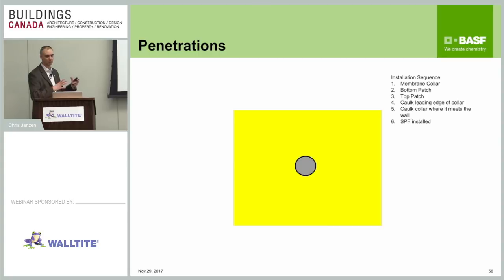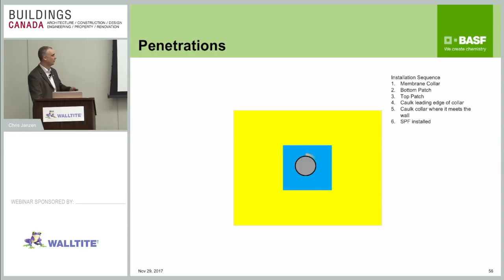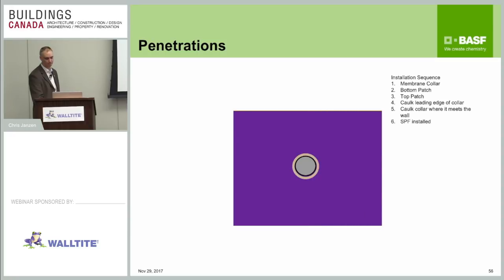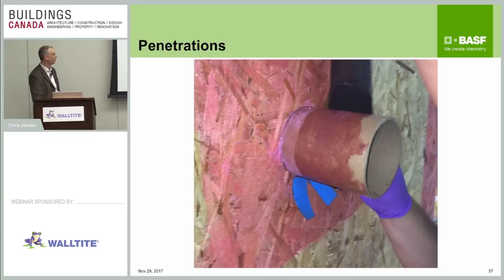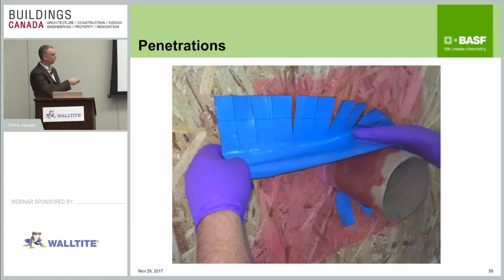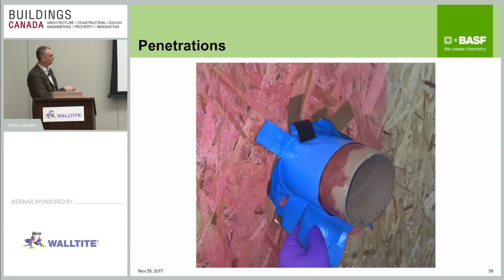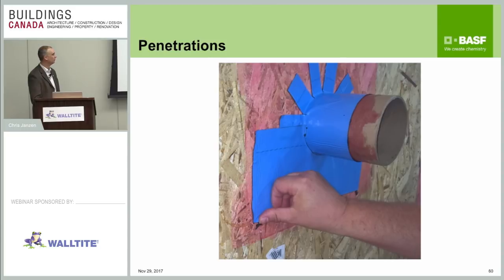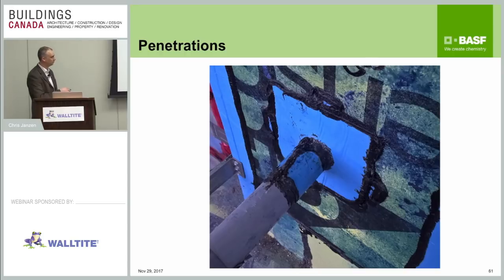Round penetrations are one of the more difficult things to detail. The trick is to take a six-inch strip of membrane, cut little dog-ear slits into it, and wrap that around the penetration. Then take a patch on the bottom and put a patch over top of that, and seal the edge with compatible elastomeric polyurethane caulking. The spray foam then goes over top. Breaking it down step by step: cut the dog ears from the six-inch membrane strip, peel off the silicone release paper, wrap the membrane around the round penetration, then peel off the release paper on the dog ears to get good adhesion onto the wall, and put patches on to ensure nice secondary protection on these details.